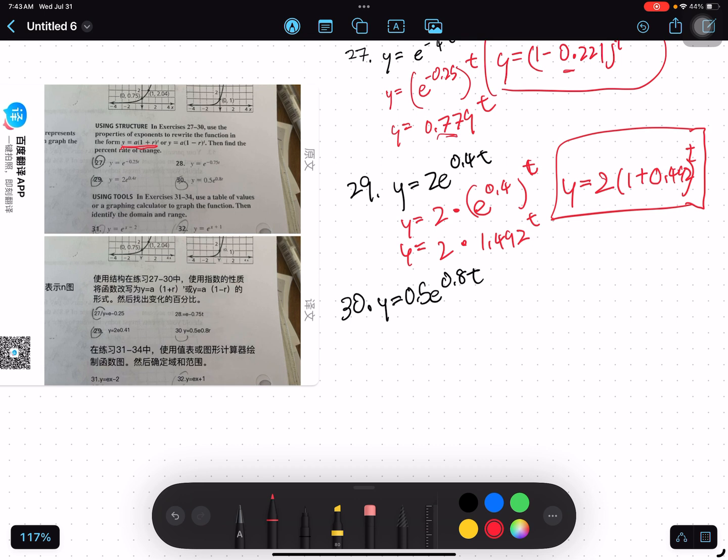Now, finally, problem 30. I can already rewrite this as 0.5 times e to the 0.8 to the t.